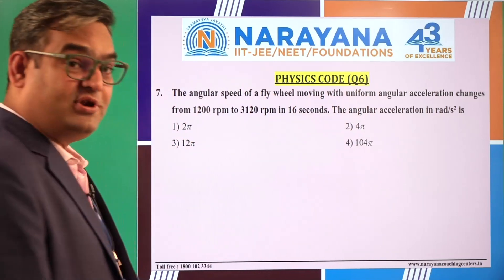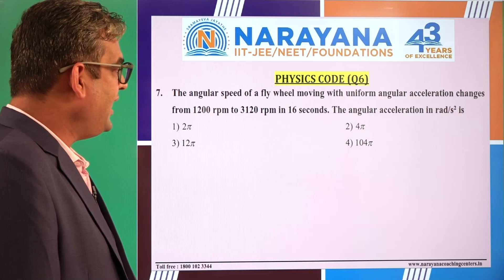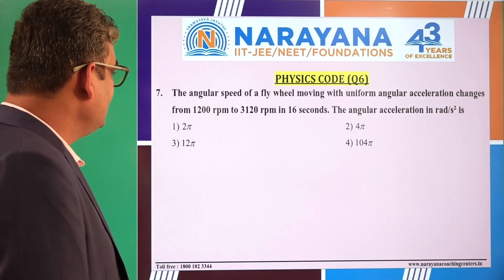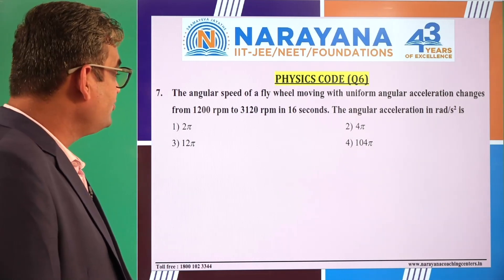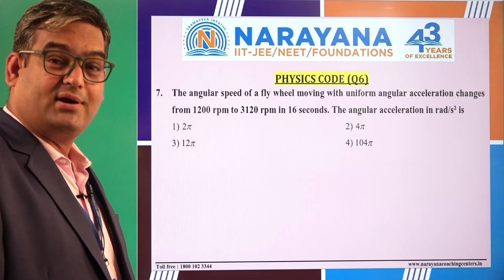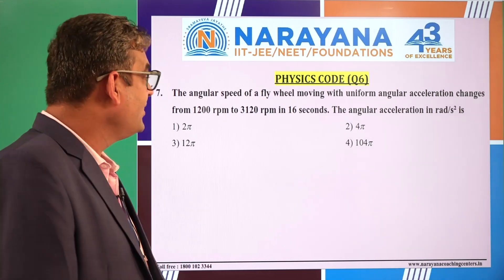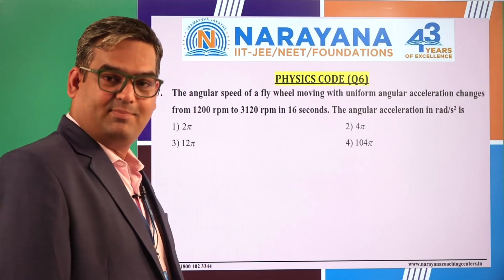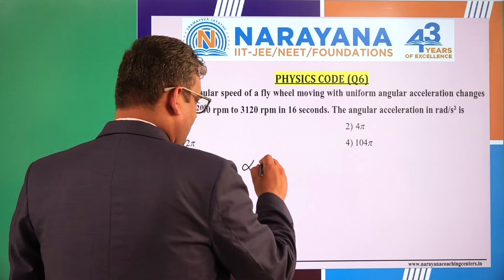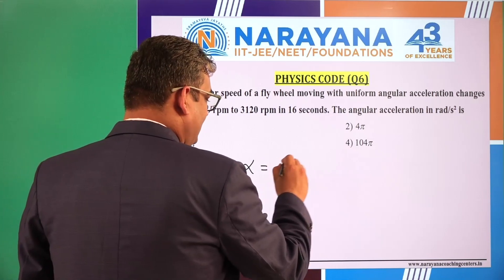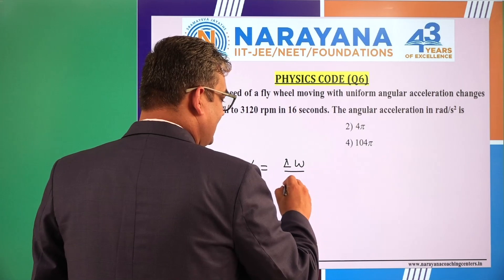Question number 7: The angular speed of a flywheel moving with uniform angular acceleration changes from 1200 rpm to 3120 rpm in 16 seconds. The angular acceleration in radians per second squared is? Since angular acceleration is uniform, alpha equals delta omega divided by delta T.